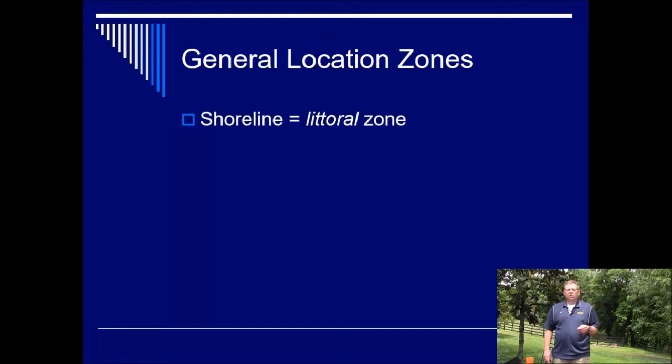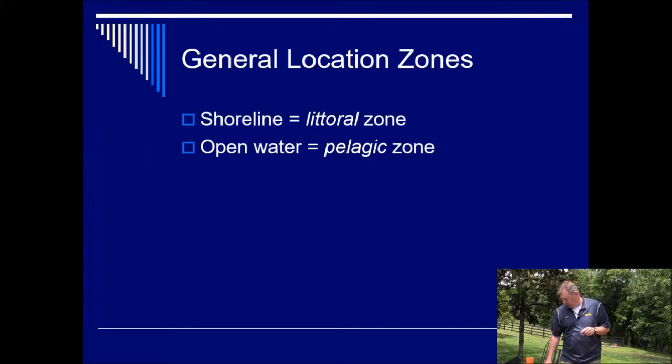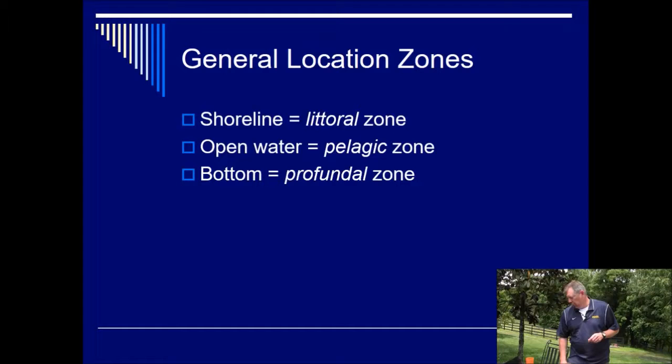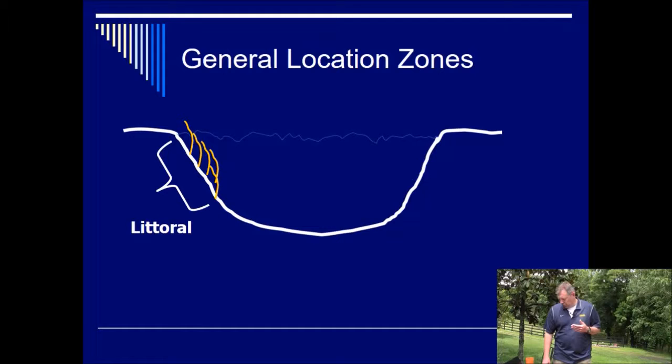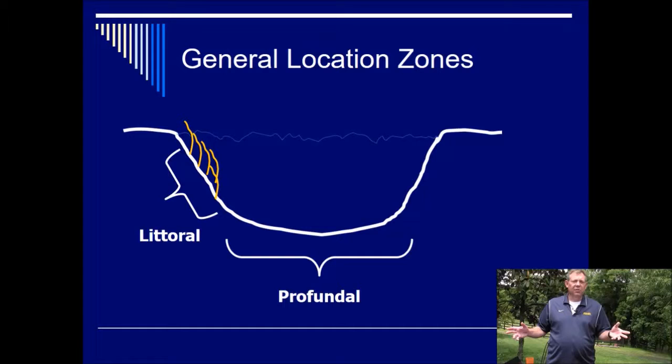In general, we call the shoreline the littoral zone. The open water is called the pelagic zone. And then the bottom is called the profundal zone. And so if you look at a general schematic, a side view of the lake here, you see the littoral zone is the shoreline. It's a shallower area. It's often where you find vegetation growing. Profundal is sort of the bottom that's not in the littoral zone, that's underneath the pelagic zone, but it's the bottom, the sediments. And then the pelagic zone is the open water.